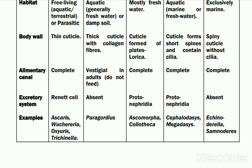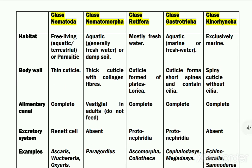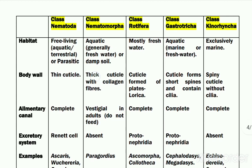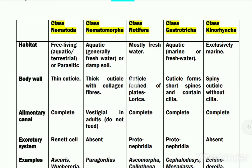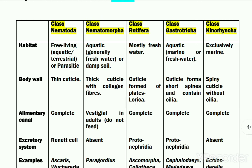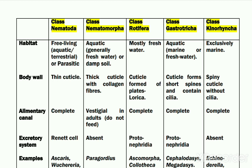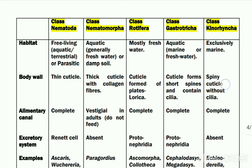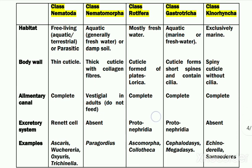Comparing body wall features: in Nematoda the cuticle is thin, while in Nematomorpha the cuticle is comparatively thicker and contains collagen fibers. In Rotifera the cuticle is formed by numerous small plates, with individual plates termed lorica. In Gastrotricha the cuticle is formed into small spines and also contains numerous cilia. In Kinorhyncha the cuticle has spines but no cilia. These differences in cuticle form the primary basis of classification.